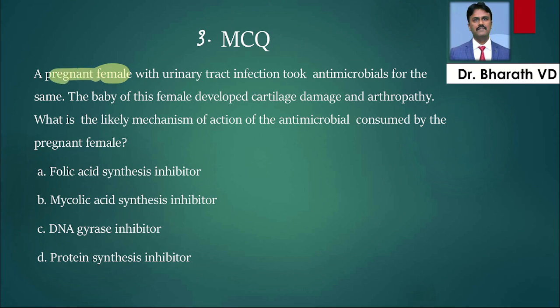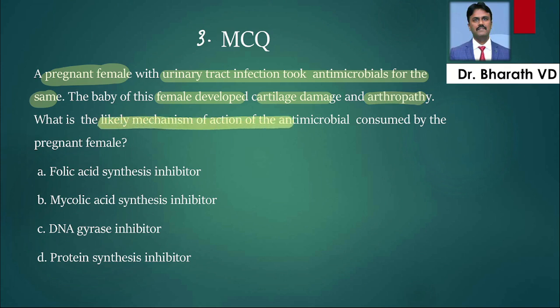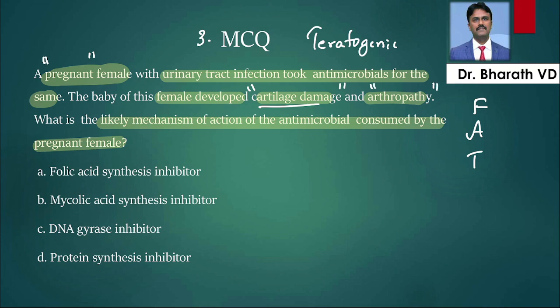A pregnant female - remember when they give female, check pregnancy - had urinary tract infection, took antimicrobials for the same. The baby of the female developed cartilage damage and arthropathy. What is the likely mechanism of action of antimicrobial consumed by pregnant female? Pregnant has taken, baby has cartilage damage - teratogenic effect. There are three teratogenic antibacterial drugs: fluoroquinolones, aminoglycosides, and tetracyclines. Fluoroquinolones cause cartilage damage and arthropathy. They are asking the mechanism of fluoroquinolones.